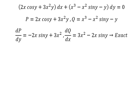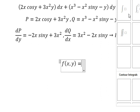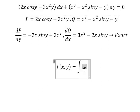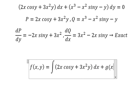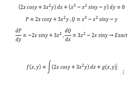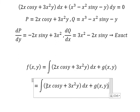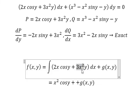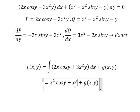Now we need to set up the function f(x,y). It equals to the integration, so I will choose this one plus g(x,y). The integration of 2x cos y gives us x² cos y, and the integration of 3x²y gives us x³y.